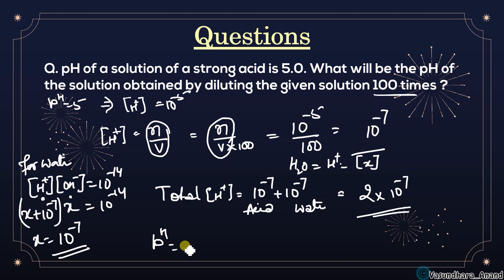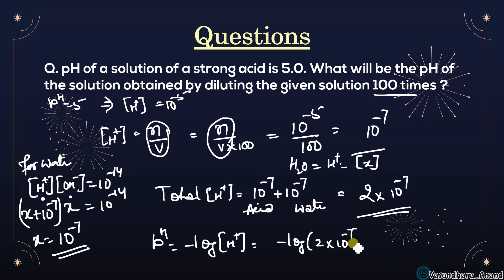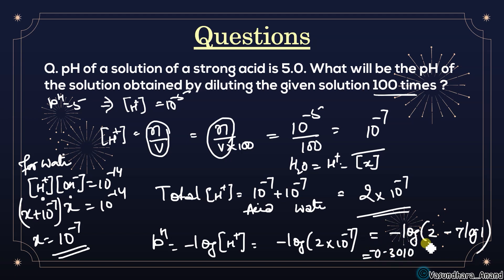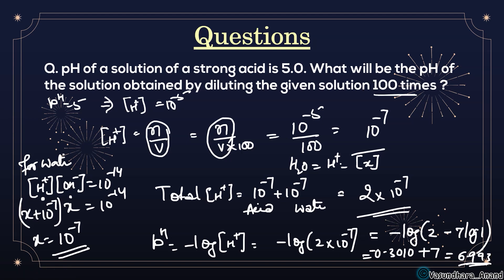pH = -log(2×10⁻⁷) = -log2 - (-7)log10 = 7 - 0.3010 ≈ 6.9. So the pH is around 7 but not exactly 7 - it is slightly less than 7. Got it? This is the correct way to solve this type of question.